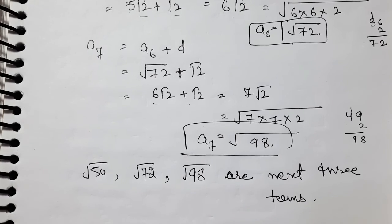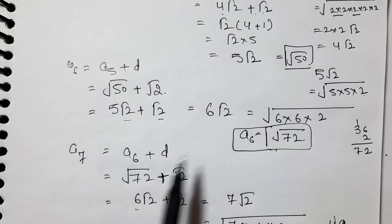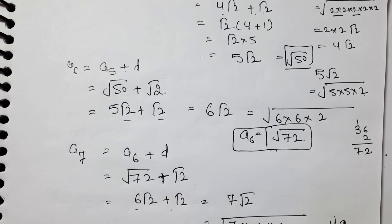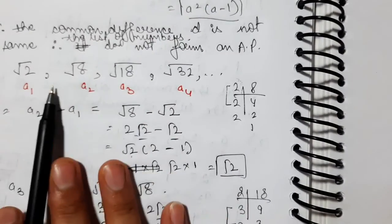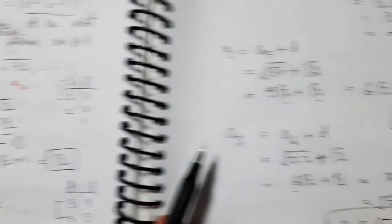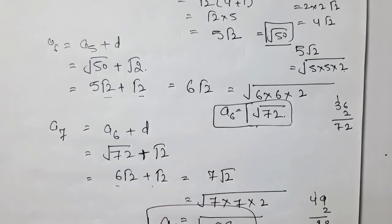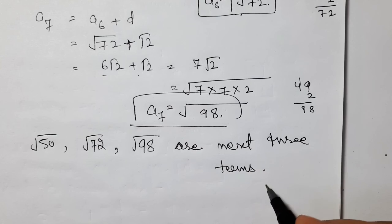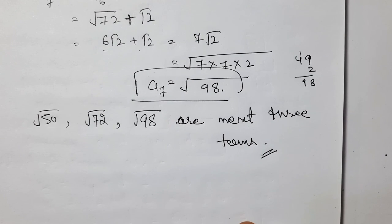Note that answers like 5√2, 6√2, 7√2 are also correct, but since the question gives numbers in root form, we convert our answers similarly to √50, √72, √98 for consistency. With this, the 12th part is also done. If you have any doubts, please write in the comments. Thank you so much, students.